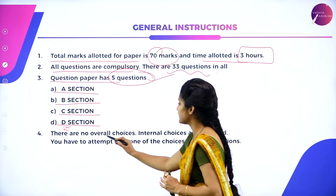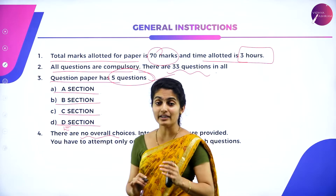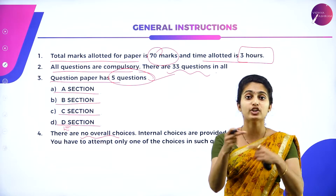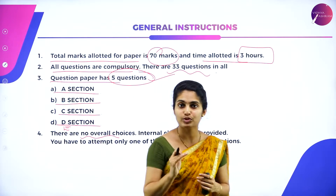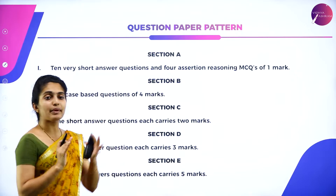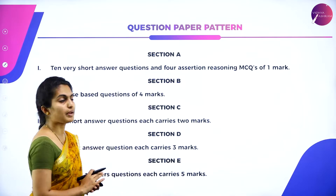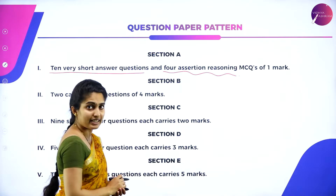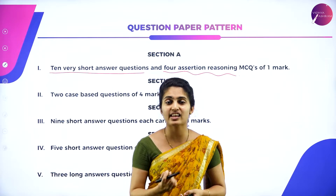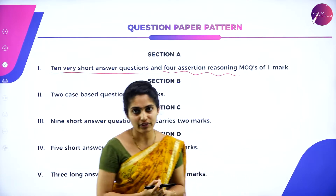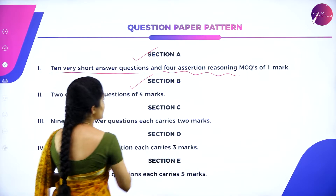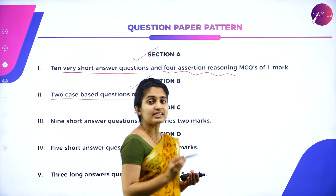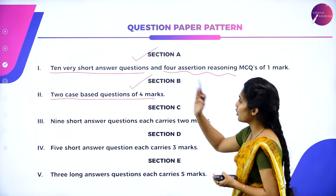There are no overall choices, but there may be internal choices in certain questions, and you have to attempt either of those two. In Section A, 10 very short answer questions are given, plus 4 assertion-type questions, each carrying 1 mark. Assertion-type questions are those where you provide reasoning. Section B includes 2 case-based questions, each carrying 4 marks.